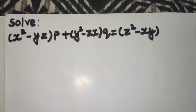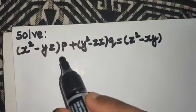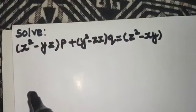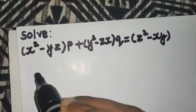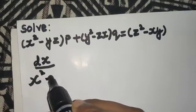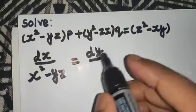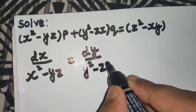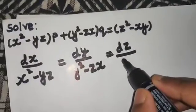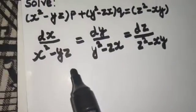We have a question from partial linear differential equations. This is of the form capital P times small p plus capital Q times small q equals R. The first step is always to write the auxiliary equation: dx divided by capital P, which is x² minus yz, equals dy divided by capital Q, which is y² minus zx, equals dz divided by R, which is z² minus xy.